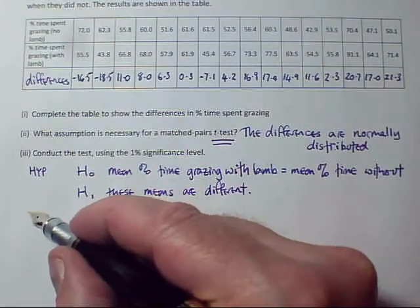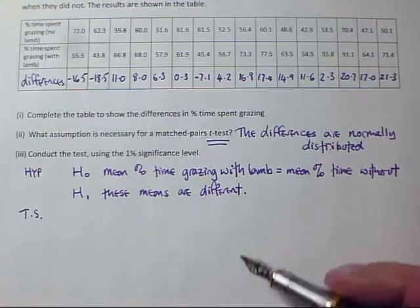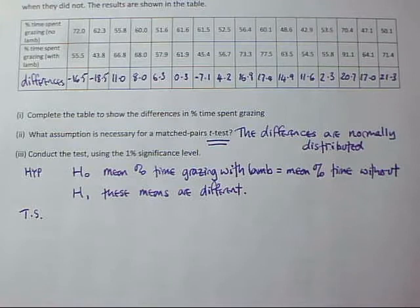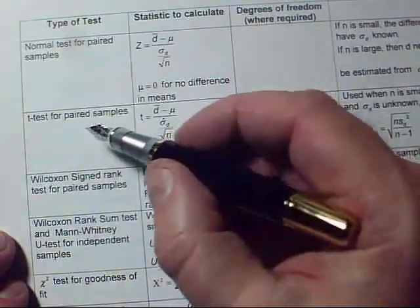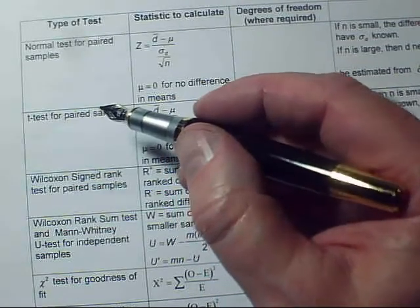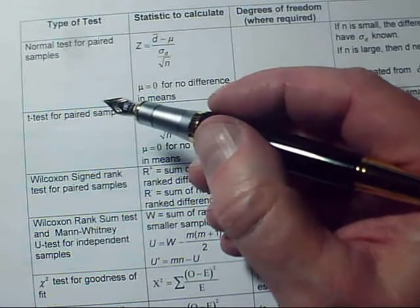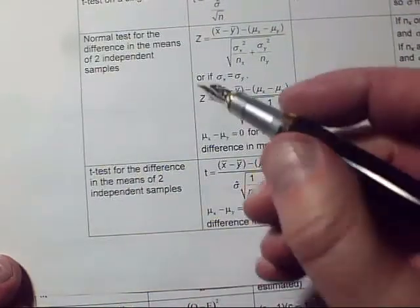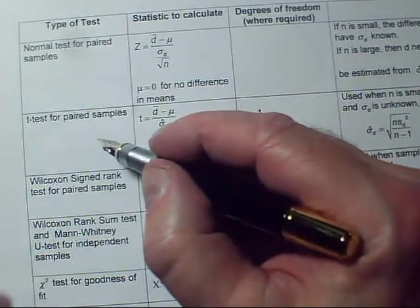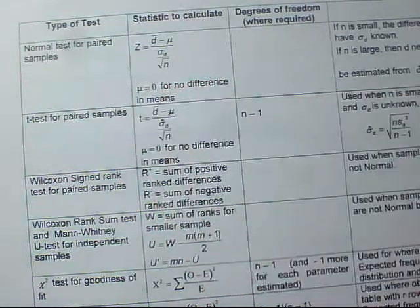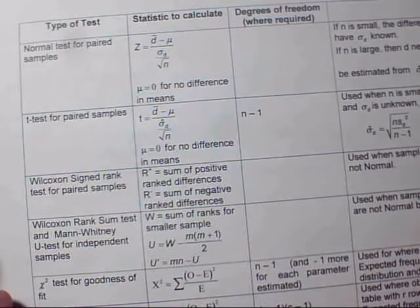Step two is the test statistic. I need to navigate to the correct place in the formula book. On page five, it discusses paired samples. Page four covers two completely independent samples, which doesn't apply here — these are the same ewes twice in matched pairs. So I definitely need the paired samples page. It's going to be a t-test, not a normal test, because these are small samples and I'll need an estimated standard deviation.